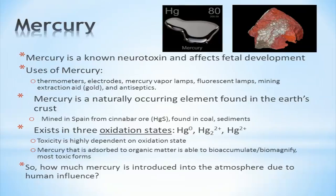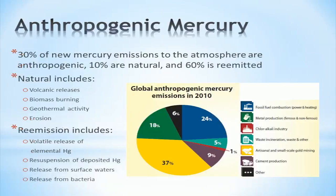Three oxidation states of mercury exist, and toxicity is highly dependent on oxidation state. Mercury which is part of an organic molecule is easily able to bioaccumulate and biomagnify, which makes organic forms of mercury highly toxic. This pie chart shows a breakdown of global man-made sources of mercury emissions. Anthropogenic mercury accounts for roughly 30% of mercury emissions into the atmosphere.